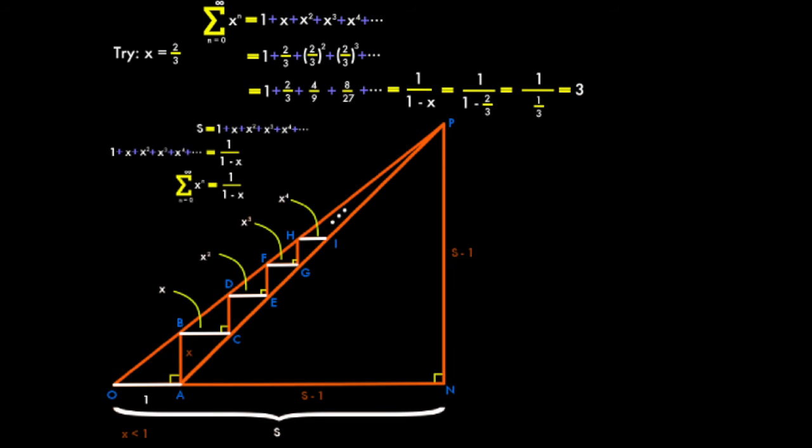And lastly, just to show that it doesn't have to be 1 over something, X can be 2 over 3, for example, just as long as X is less than 1, so that's 1 plus 2 thirds plus 2 thirds squared plus 2 thirds cubed, so you get 1 plus 2 thirds plus 4 ninths plus 8 27ths plus on and on and on and on, which is 1 over 1 minus 2 thirds, which is 1 over 1 third, which would be 3. So if, in the triangle, you made that side 2 thirds, then the side S would be equal to 3.